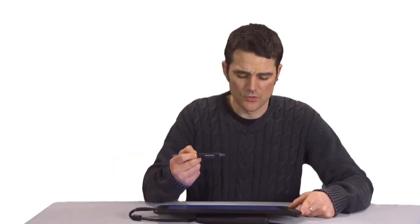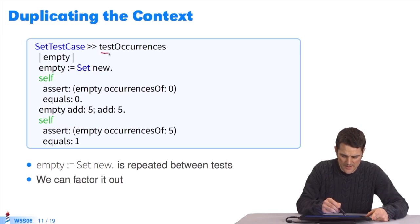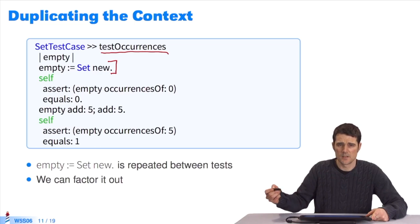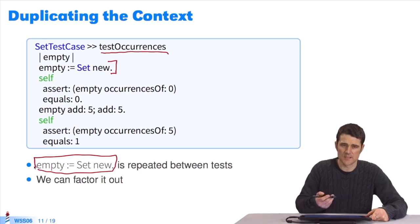We might, when writing lots of tests, realize that there are duplicates when writing the context of the test. For example, here I've written another test for the sets, a test occurrences. We see that here, in the context, I'm going to recreate a new empty set. Each time I write a test, I open a set. And each time I'll do set new in the context. We'd like not to repeat this line every time in all of our tests. To not have to repeat them, to be able to factor it out somewhere else, we have a solution.